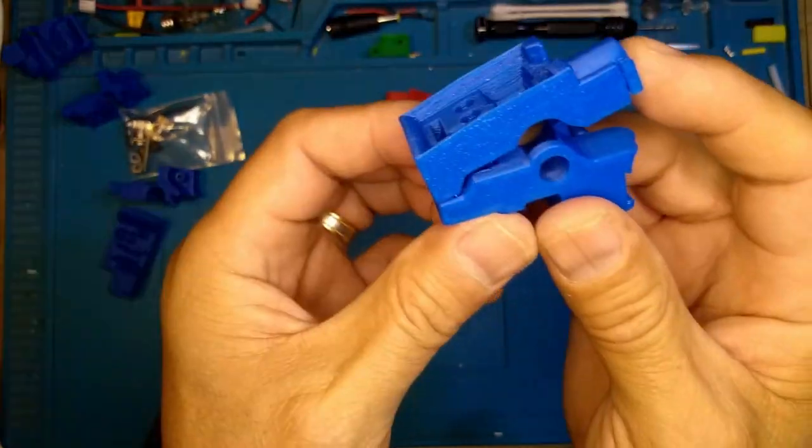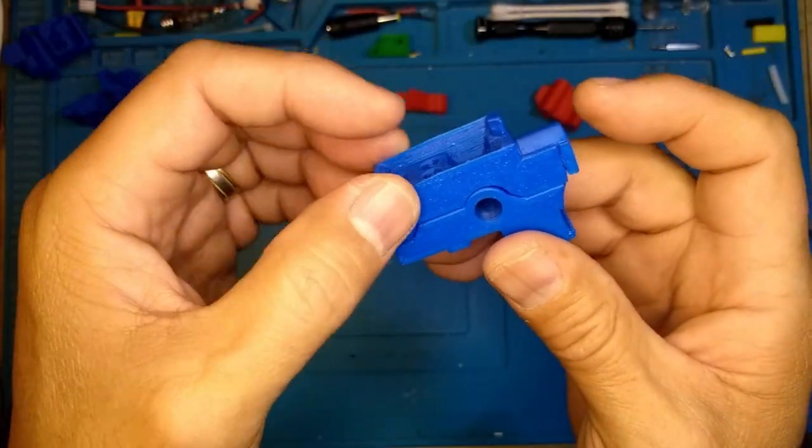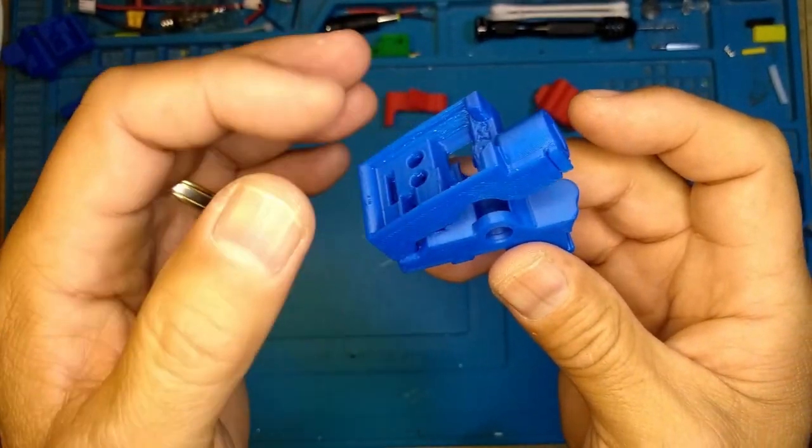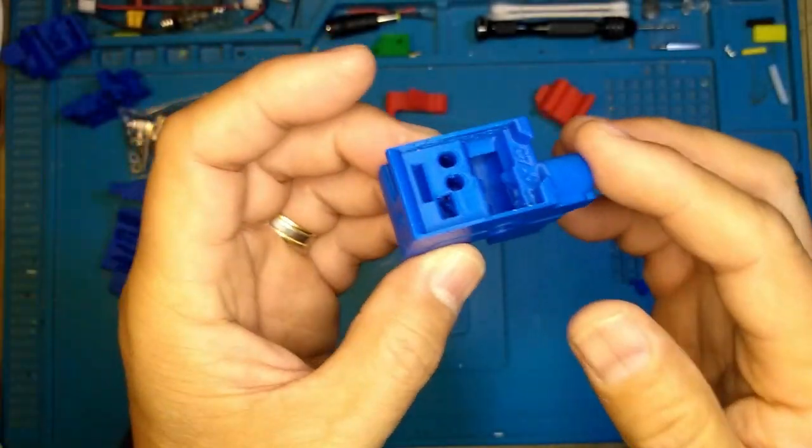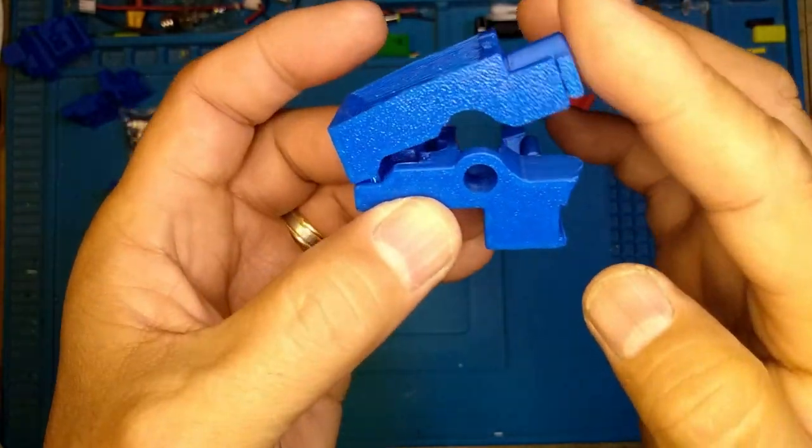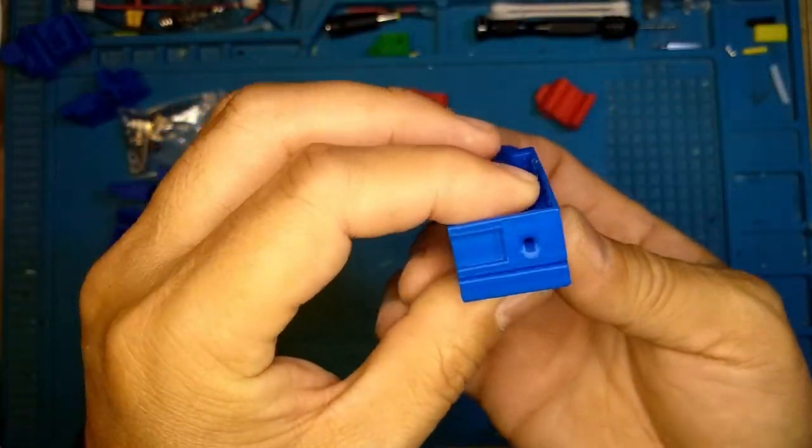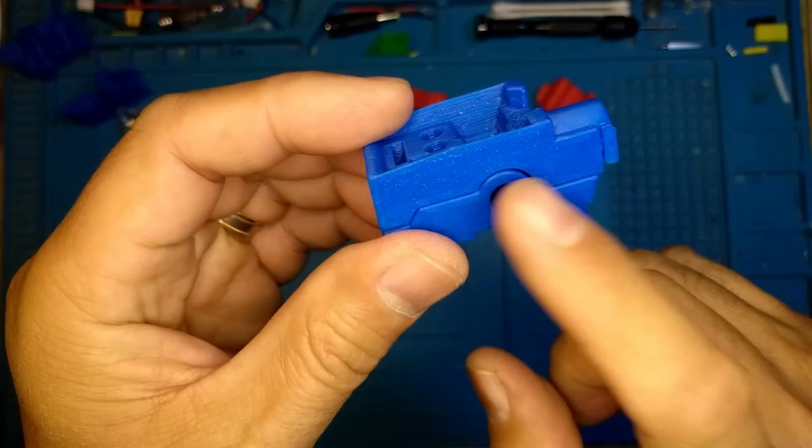It should be that loose and simple. There shouldn't be any resistance, should just fall back down. That's the kind of clearance you want.